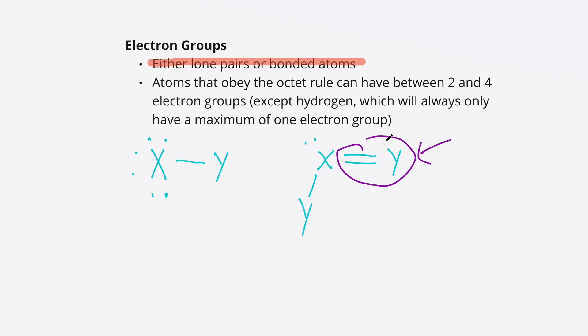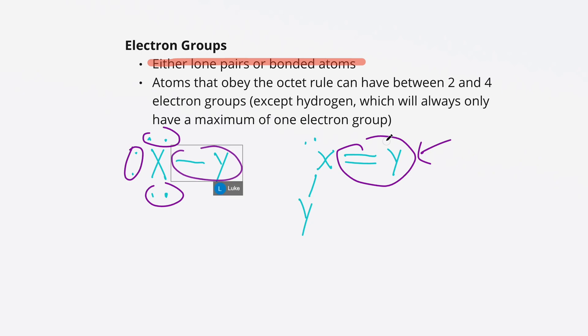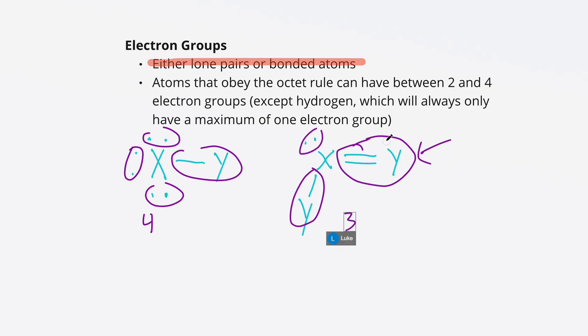Let's count how many electron groups we have on each of these examples. The first one on the left has three lone pairs and one bonded atom, so that one has four electron groups. The one on the right has the double-bonded y, a single-bonded y, and then a lone pair — so the one on the right only has three electron groups.